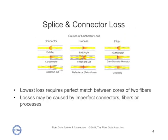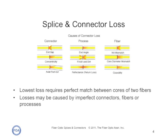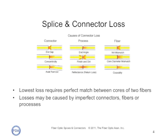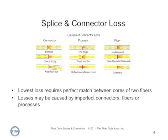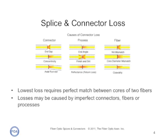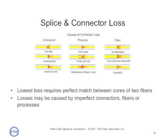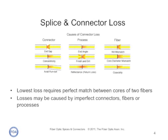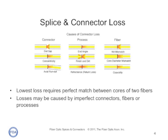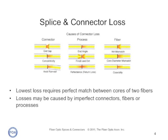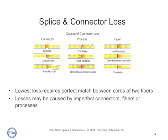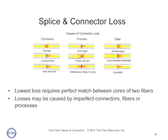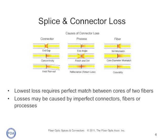Loss is probably the most important performance specification, and there are many reasons that fibers have loss when they're joined together. As you can see from this diagram, the losses may be caused by imperfect connectors, imperfect fibers, or imperfect processes. All of these things must be understood in order to get low-loss joints. We'll cover this later when we cover how splices and connectors are made.